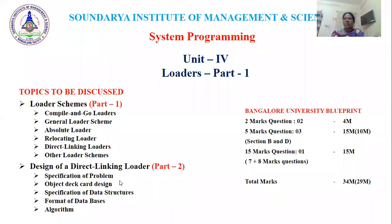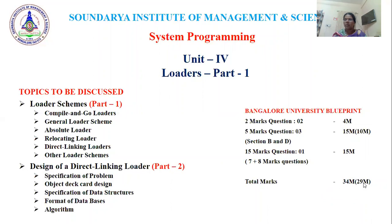Part two covers the design of indirect linking loader, specification of the problem, object card design, specification of data structures, format of databases, and the algorithm with respect to the direct linking loader — all to be learned in part two, the next video. According to Bangalore University blueprint, two-mark questions, five-mark questions, and 15-mark questions will be asked, totaling 34 or minimum 29 marks from this chapter.